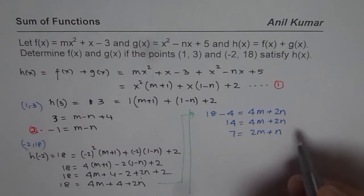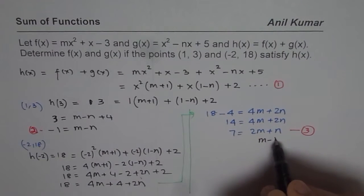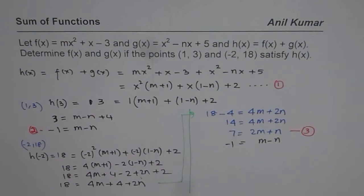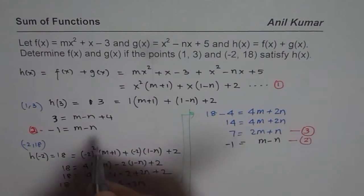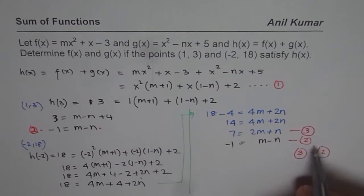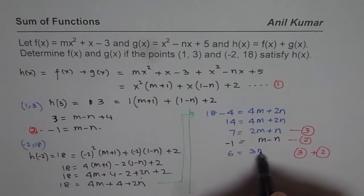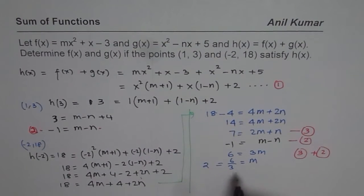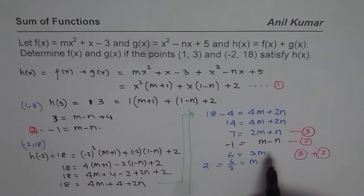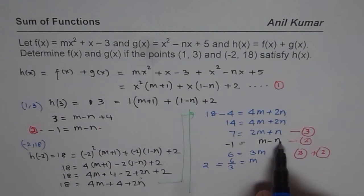We already have equation 2 as m minus n equals minus 1. Adding equation 3 and equation 2: 7 plus (-1) equals (2m plus m) plus (n minus n), which gives 6 equals 3m, so n cancels and m equals 6 over 3, which is 2. So we get the value of m equals 2. Now we can find n using equation 2.